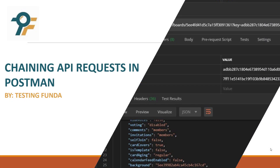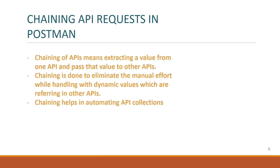Hello everyone, welcome to this Postman tutorial. In this tutorial we would be learning the chaining concept of APIs in Postman. Chaining of APIs means that you would be extracting a value from one API and passing that value to other APIs.